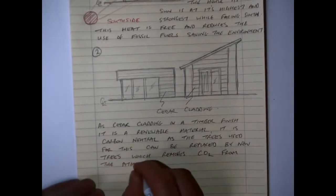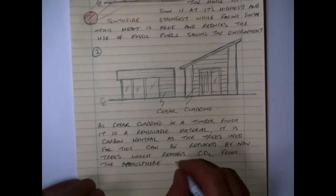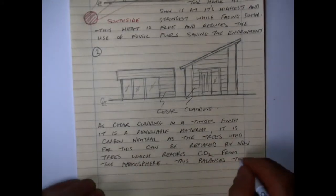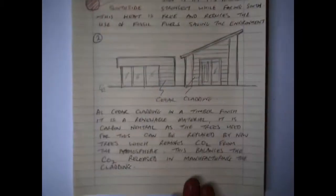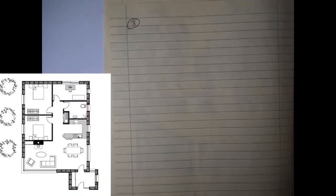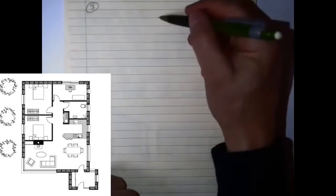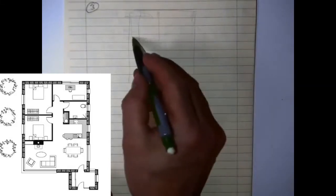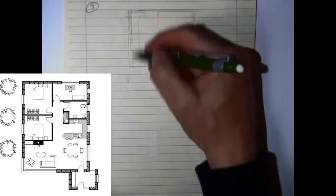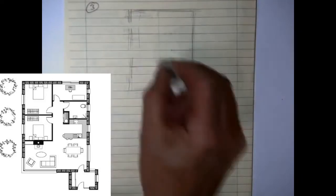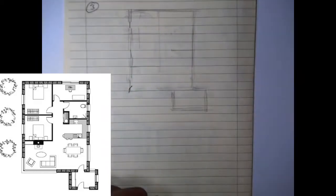So again referring back to the question, the question asks for three features. We've got two features highlighted here and for my third feature what I'm going to head for is I'm going to use the plan that is given in the drawing or in the question. I have it highlighted here on the screen and what I'm going to do is I'm just going to sketch out that plan and I'm going to highlight the use of using the maximum amount of passive solar heat and light coming into the house. So what the glazing areas all orientated towards the southern side of the building.